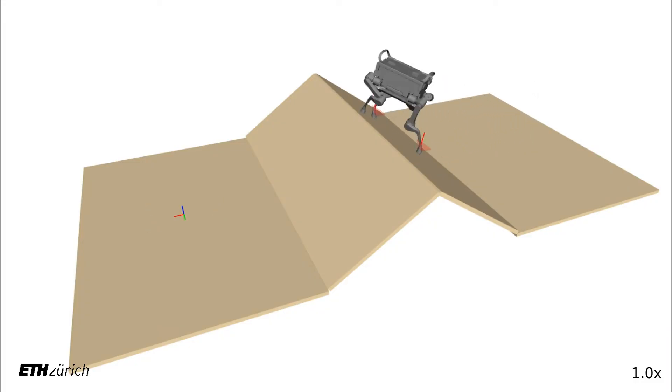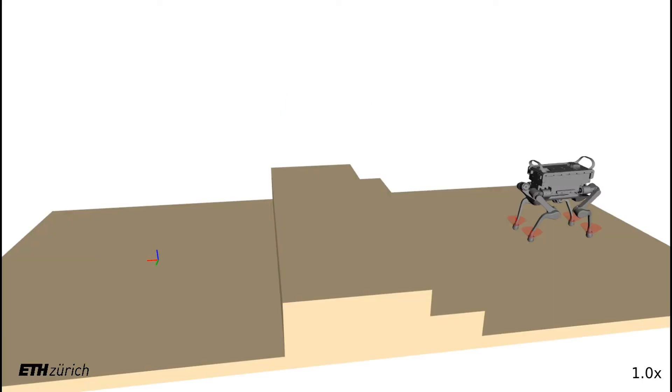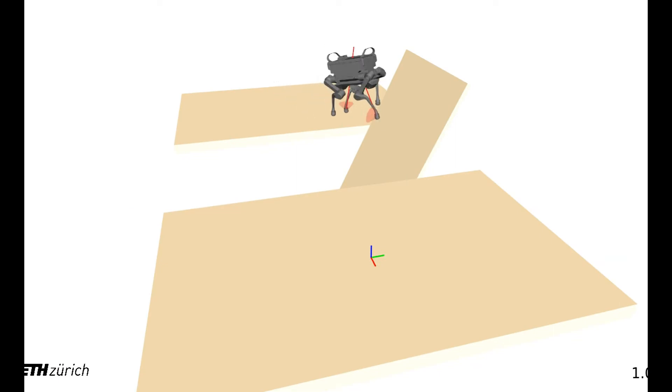Non-flat terrain is modeled as a constraint on the foot height during stance phase. The body position and orientation is automatically adapted by the algorithm to respect the kinematic limits.